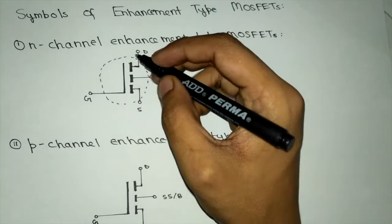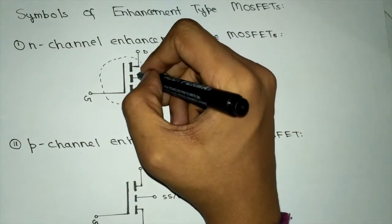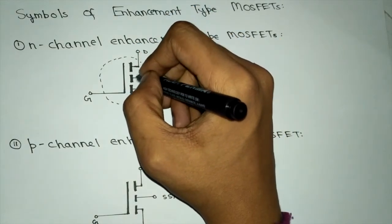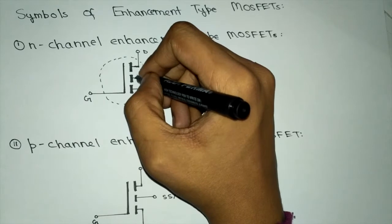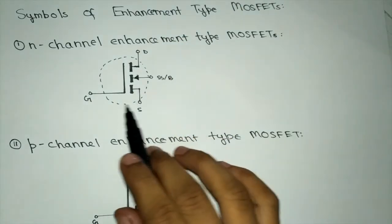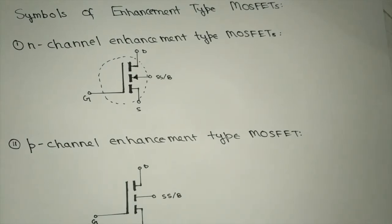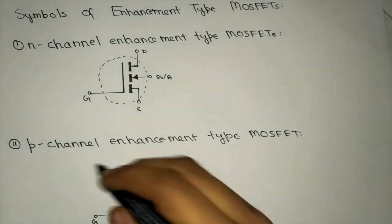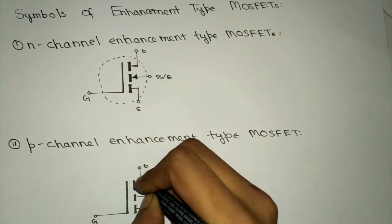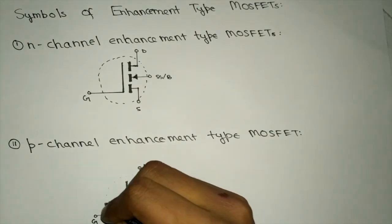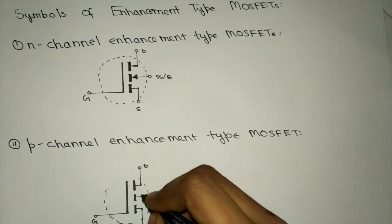For N channel enhancement type MOSFET, the arrow is directed towards the MOSFET. Similarly, for P channel enhancement type MOSFET, the structure would be similar, only the arrow would be directed away from the MOSFET.